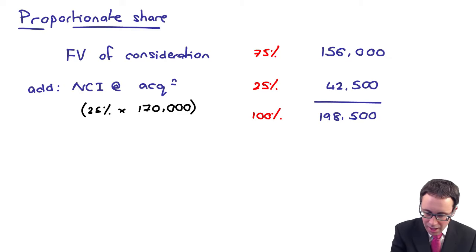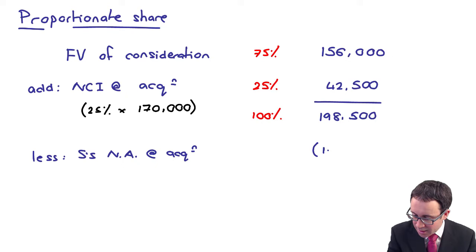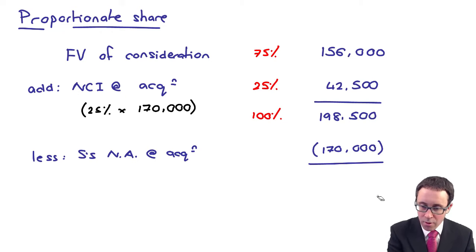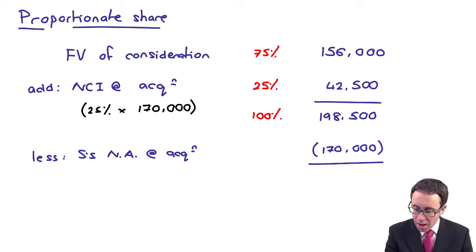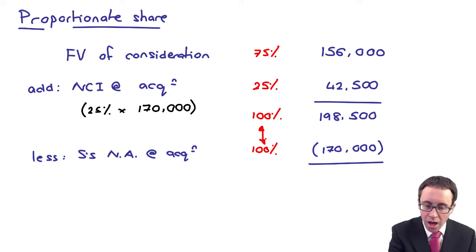We then deduct S's net assets at acquisition, which are $170,000. Even though we only control 75%, we deduct the net assets in full because we're comparing like for like. That gives goodwill of $28,500 — that is the goodwill based upon the proportionate share method. You'll need to commit the proforma to memory, and the challenge then comes in putting in the correct numbers.